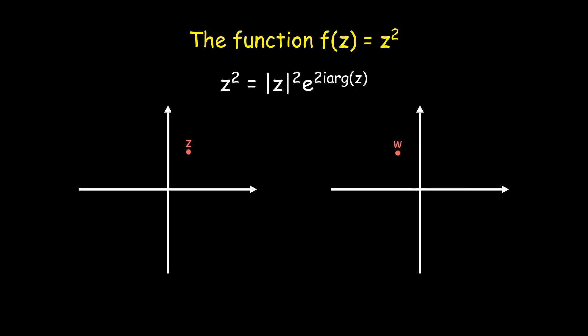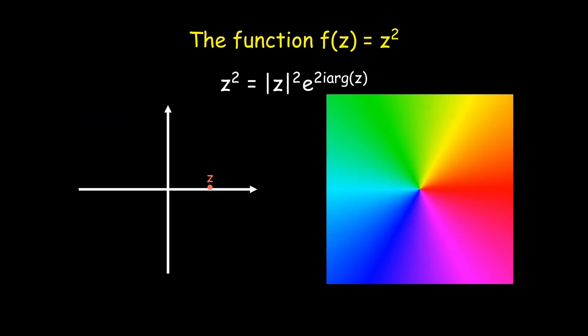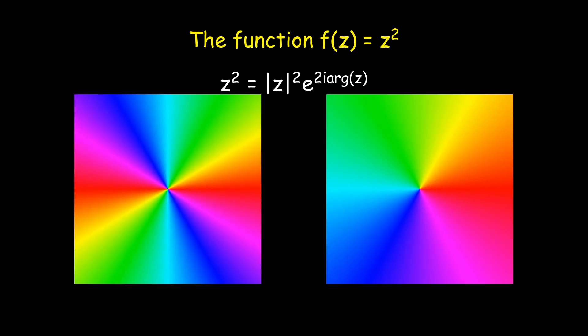First, let's look at the simple example of a zero using the function f(z) = z², which has a zero at the origin. Because the argument of z² is just twice the argument of z, f(z) orbits the origin twice, while z orbits it only once. Therefore, in the phase portrait, all of the colors meet twice at the origin.